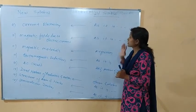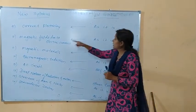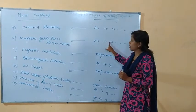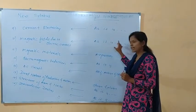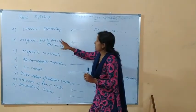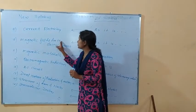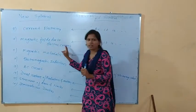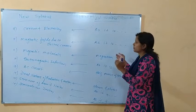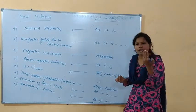I will give you a new lesson. Next lesson is Magnetic. You will learn the magnetic effect of electric power. Now, magnetic field due to electric current — it is the effect of the magnetic field.